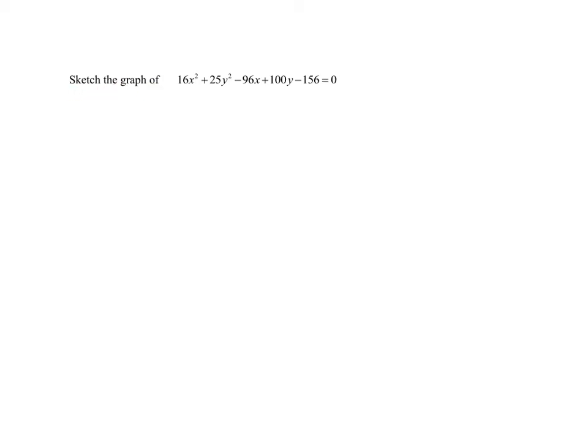In this problem I need to sketch the graph of this equation. If you notice there's an x squared term and a y squared term. When x and y are both squared it's either a circle, ellipse, or hyperbola. The coefficients of x squared and y squared are both positive but they're not equal, so this looks like it's going to be an ellipse.